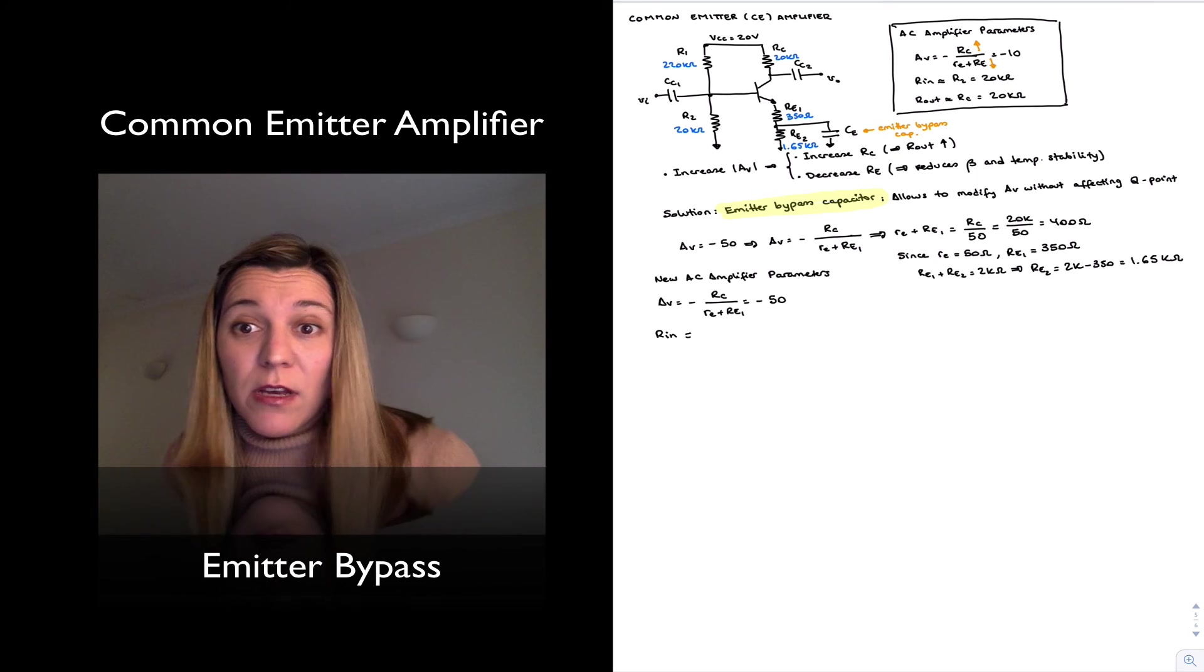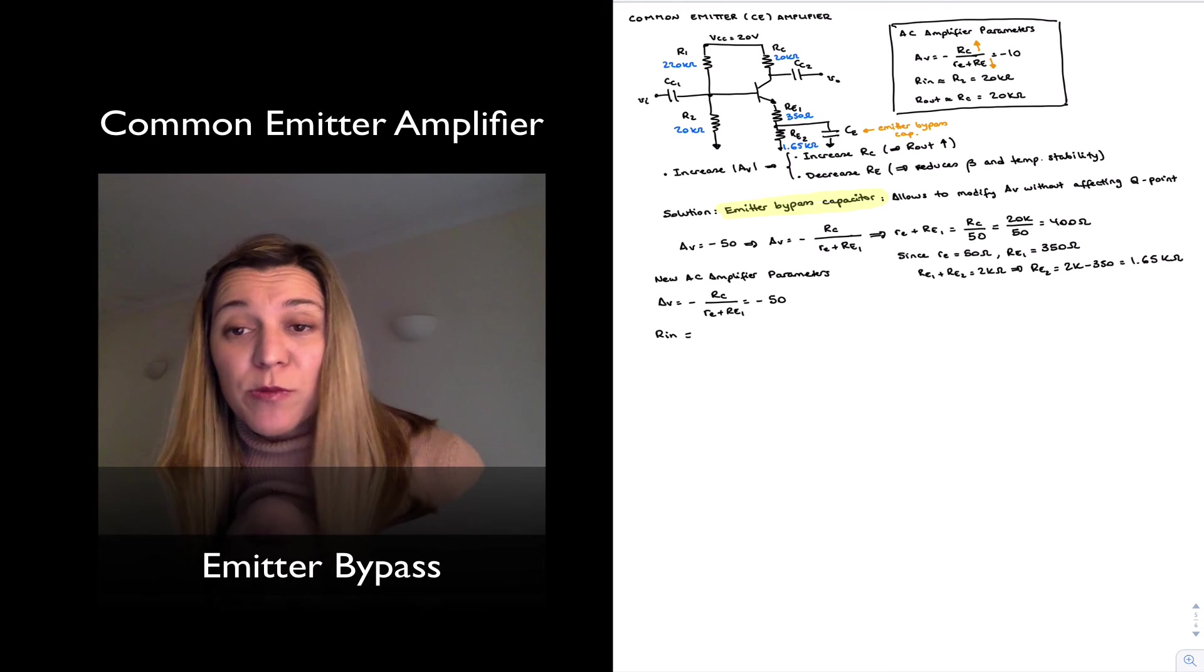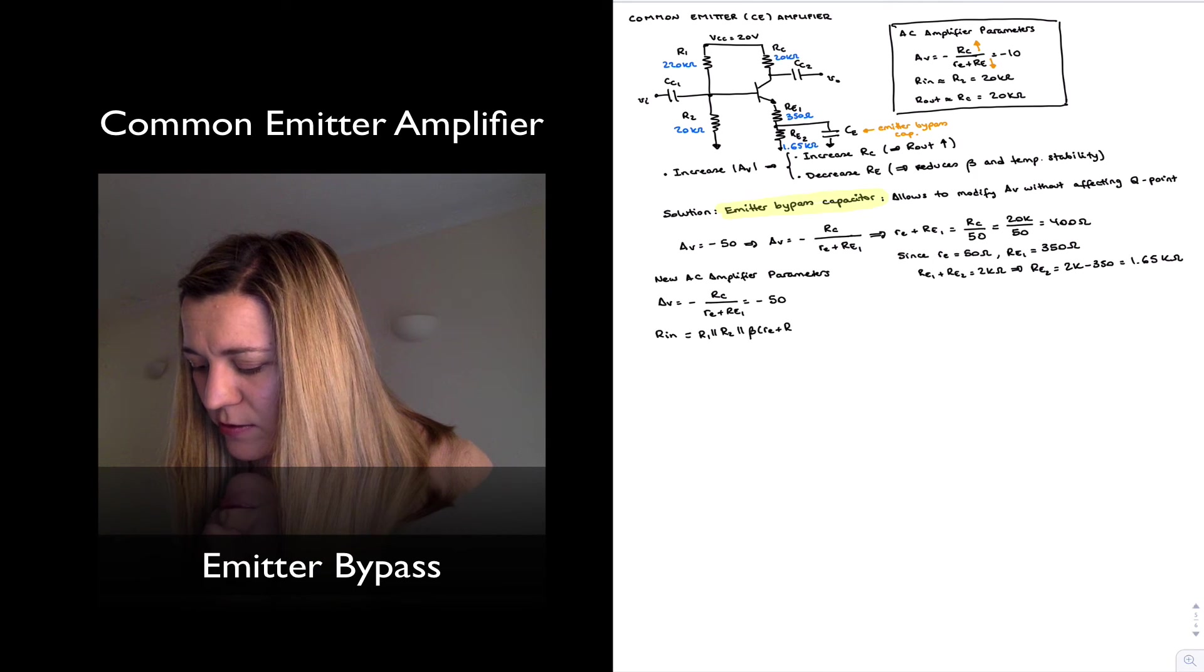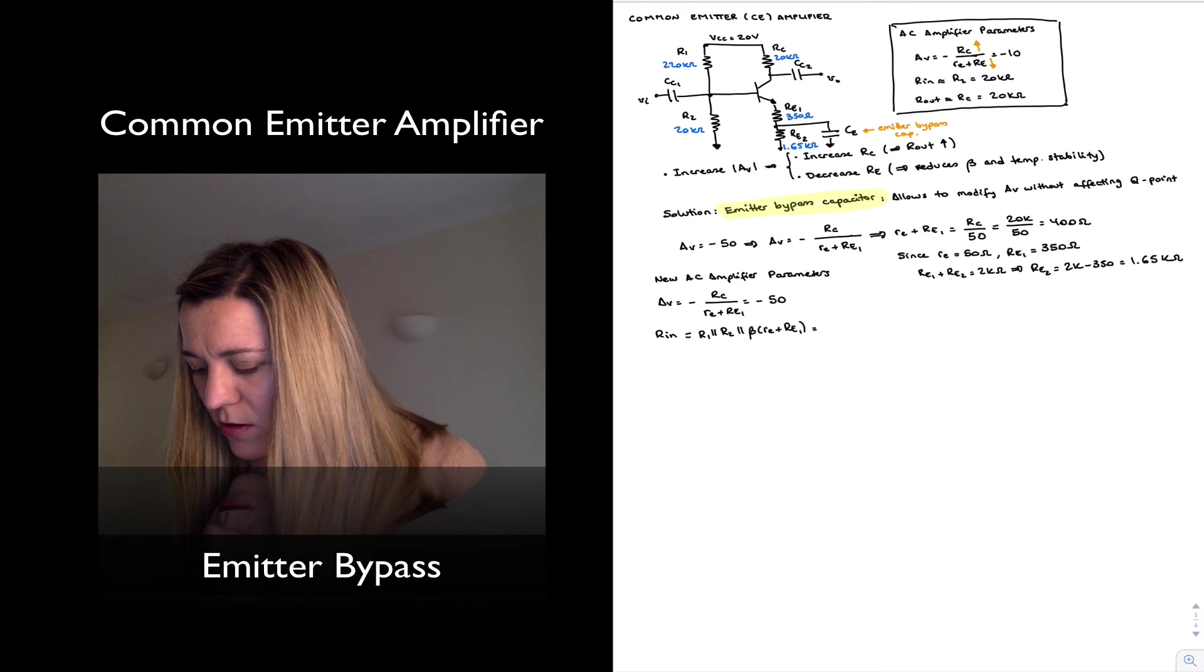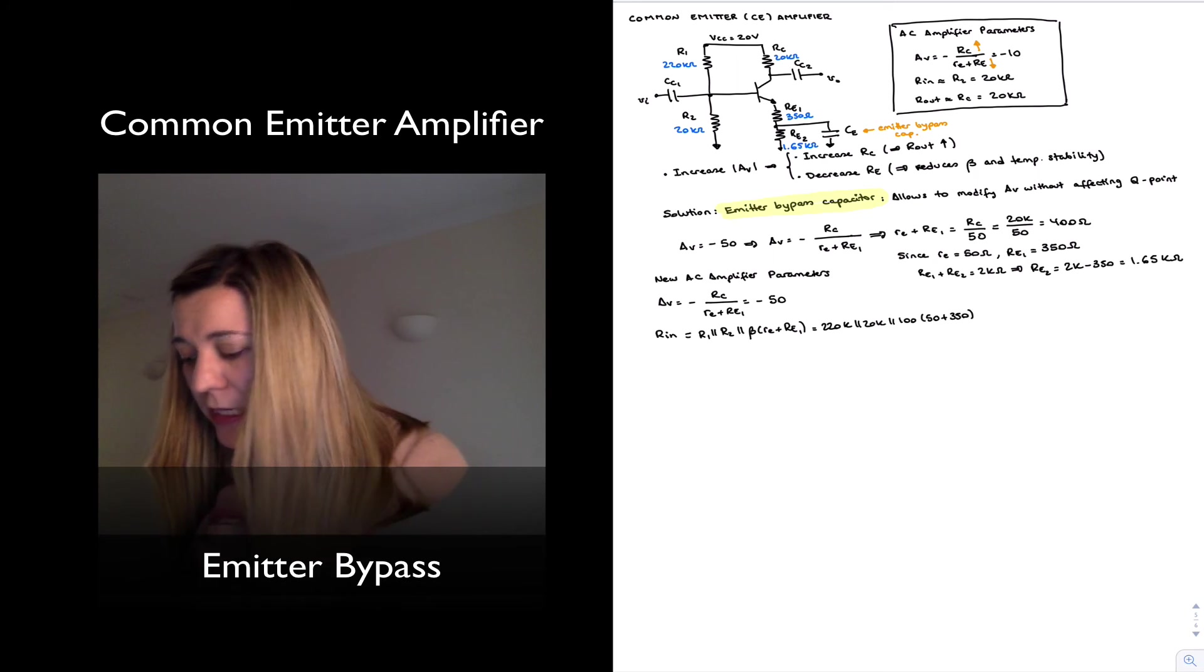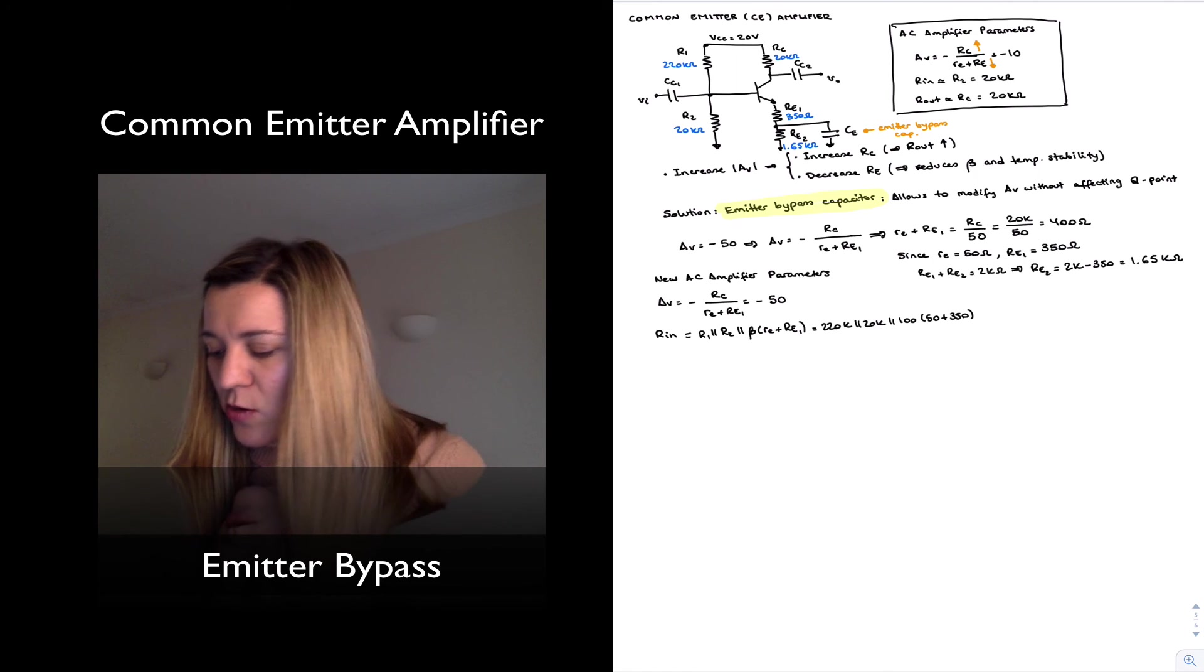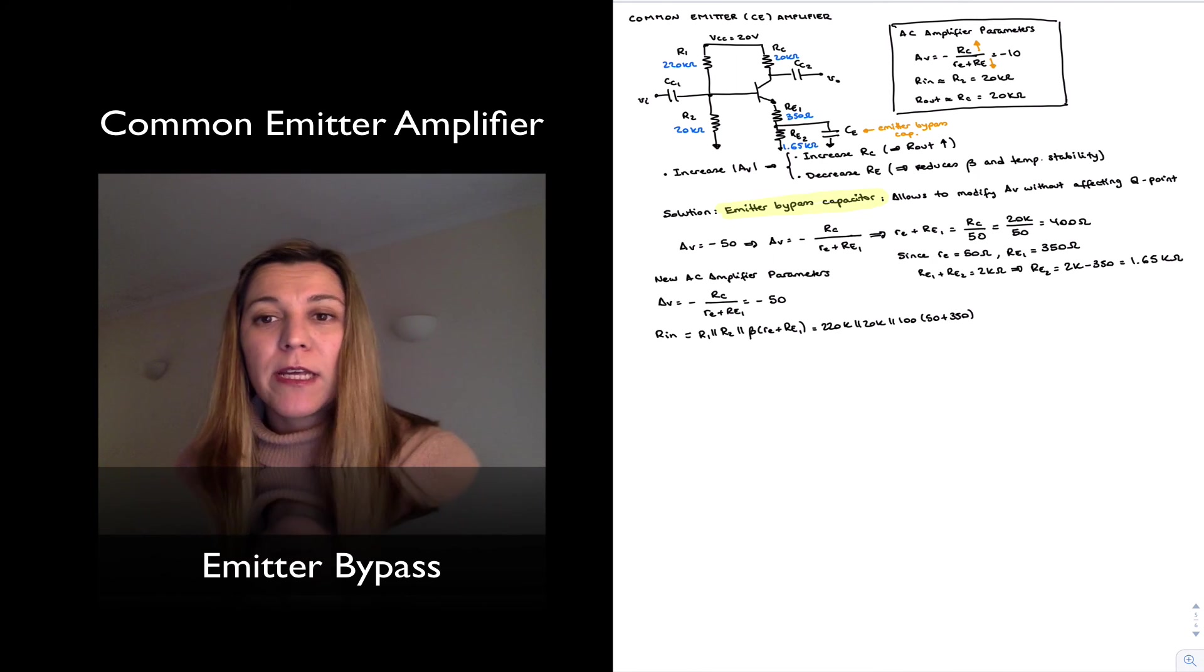Now how does R in and R out, how have they changed if they have at all? R in, if you remember, was approximately equal to R2, but it was overall equal to R1 in parallel with R2 in parallel with beta times little RE plus, in this case it's now RE1. So this will be 220K in parallel with 20K in parallel with 100 times 50 plus 350. So basically 400 times 100 will be 40K.